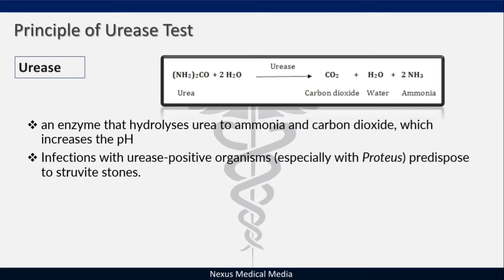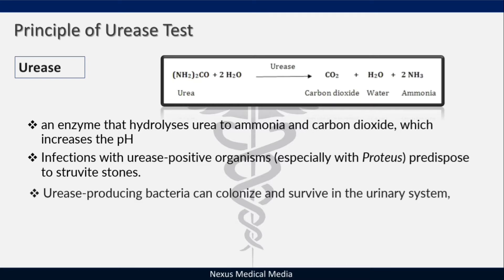Infections with urease-positive organisms, especially Proteus mirabilis, will predispose to struvite stones by formation of those stones, mainly in the urinary tract.